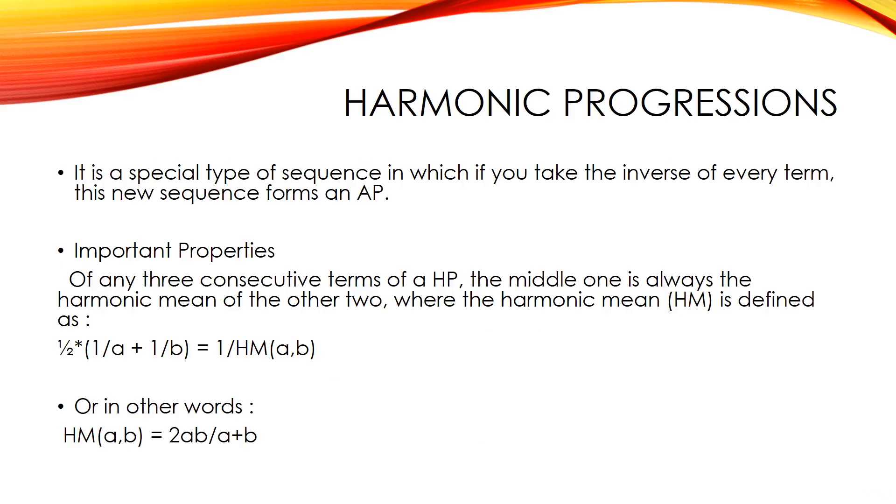Harmonic progression is a special type of sequence in which if you take the inverse of every term, this new sequence forms an AP. Of any three consecutive terms of a HP, the middle one is always the harmonic mean of the other two where the harmonic mean is defined as half into 1 by a plus 1 by b equals 1 by HM of a comma b. Or in other words, HM of a, b equals 2ab by a plus b.